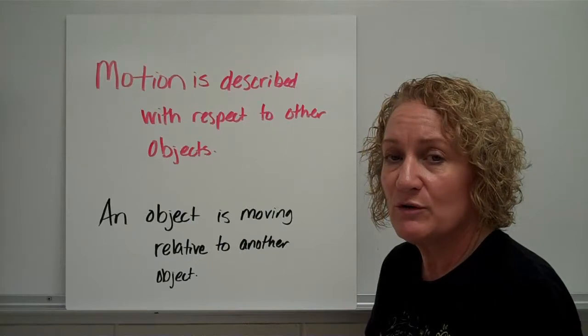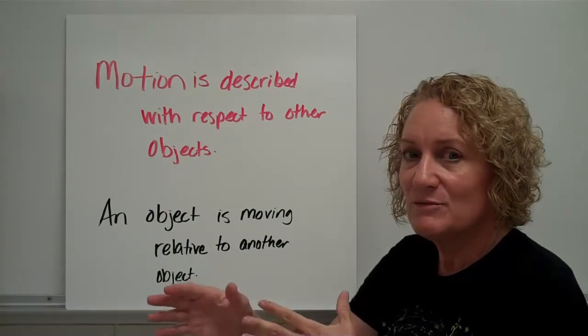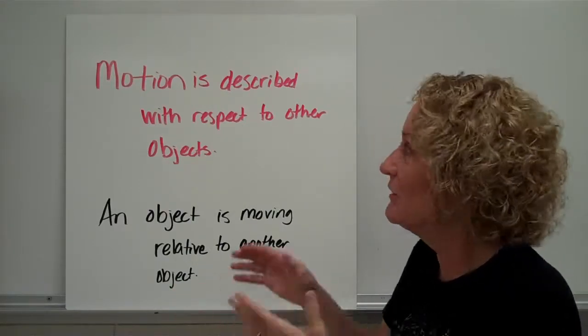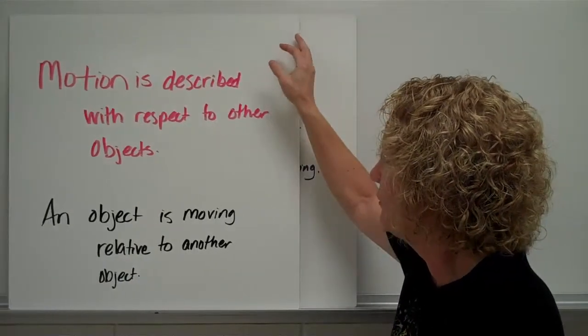If you have two cars, you can tell which one's going faster because one is moving faster than the other. So motion is described with respect to other objects.